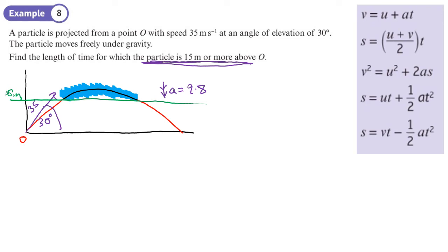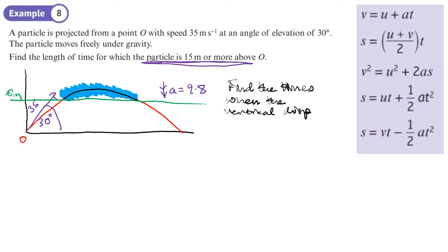To solve this, we'll find the two times when the vertical displacement equals 15 meters. The particle is above 15 m between those two times, so we find the difference. This question is all to do with the vertical — the vertical displacement Sy = 15.